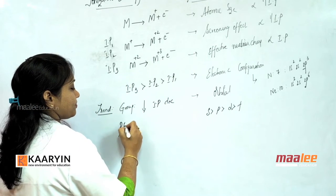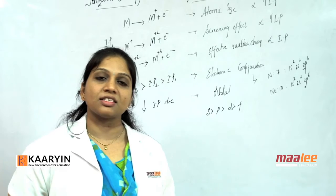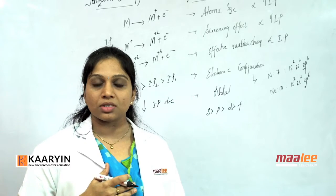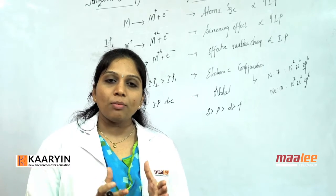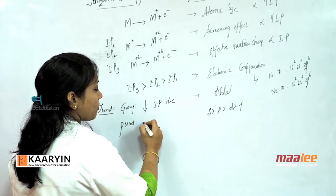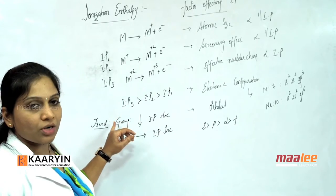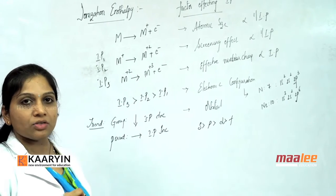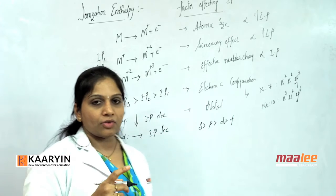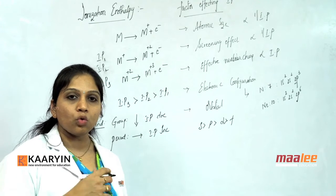Coming to the period: from left to right, as atomic number increases, electrons enter into the same orbit. Effective nuclear charge works well and operates more, causing atomic size to reduce. Thereby, IP values increase. So in a period from left to right, IP values increase. In a group from top to bottom, IP values decrease; in a period, IP values increase. There are some exceptional cases in a period, but in general this is the trend.